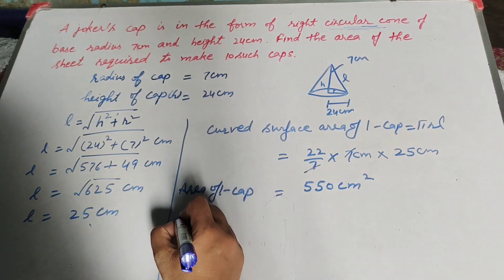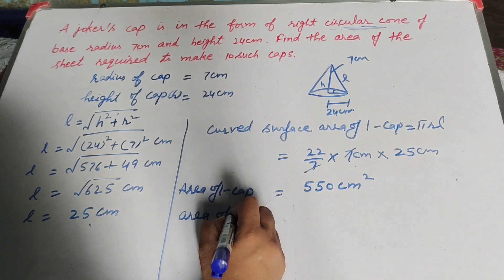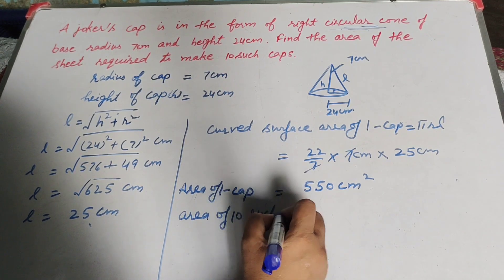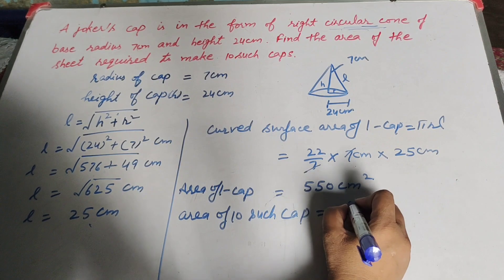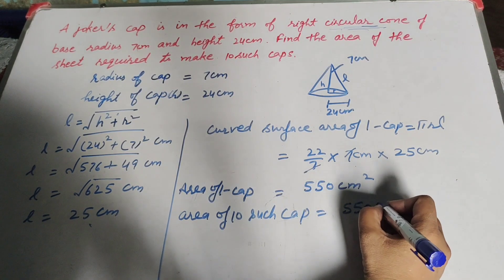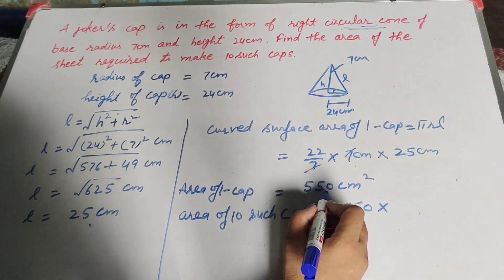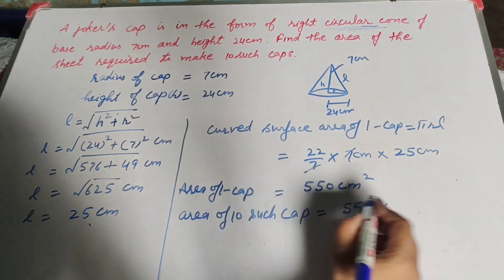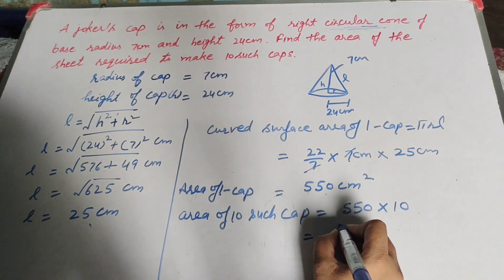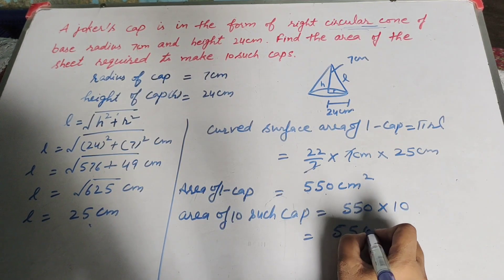Area of 1 cap equal to 550 cm square. So area of 10 such caps equal to 550 multiply by 10, so it is equal to 5500 cm square. This is the answer we find.